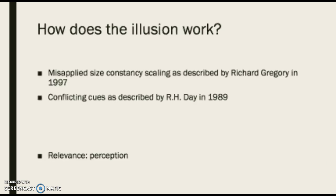The two most known explanations that aim to describe how the Müller-Lyer illusion works are known as misapplied size constancy scaling and conflicting cues. Misapplied size constancy scaling, as described by Richard Gregory in 1997, explains that the arrowheads on the lines engage with the part of the visual system that deals with depth cues in retinal images, and leads to the line with the outward wings being perceived as longer because it's being processed as though it is further away.